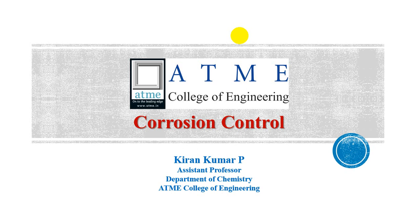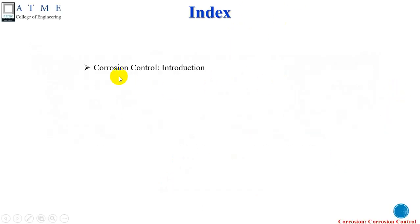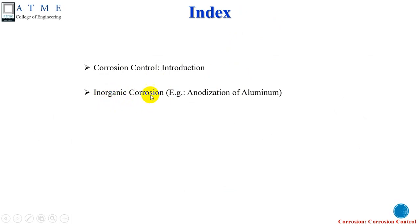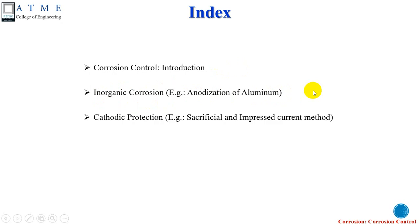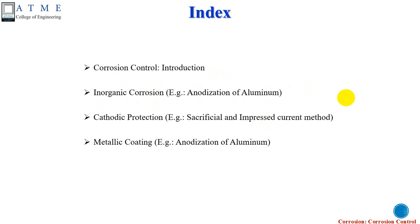Hello, welcome to the lecture session on corrosion control. I am Kiran Kumar P, assistant professor, Department of Chemistry, ATME College of Engineering. Today we shall discuss the introduction to corrosion control and its types: inorganic coating, the anodized oxide method, cathodic protection — including the sacrificial anode and impressed current methods — and metallic coating, specifically the anodization of aluminium.